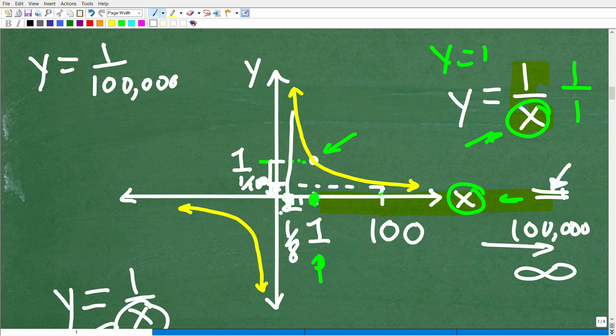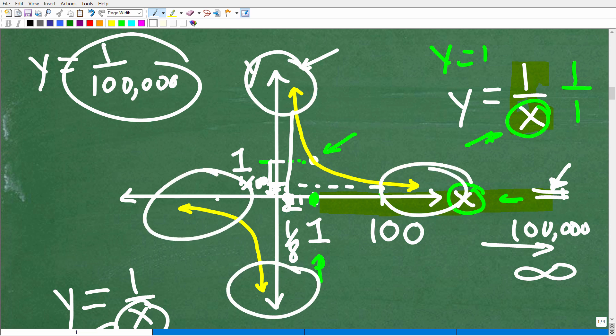Now, as we make this fraction smaller and smaller and smaller, let's say we have an x value of 1 over 100,000. Well, our graph is really going to go high. So we have an asymptote here, an asymptote here, and the same thing will apply when we're using negative values as well.